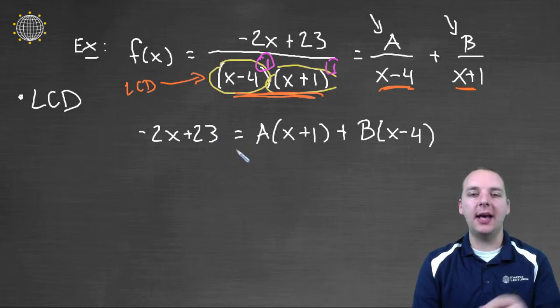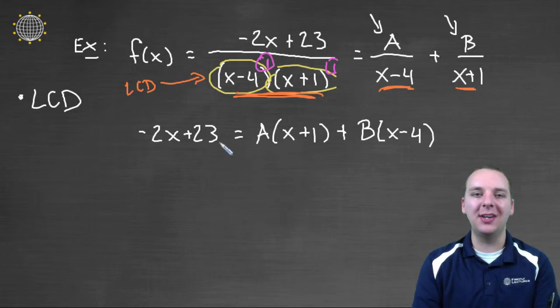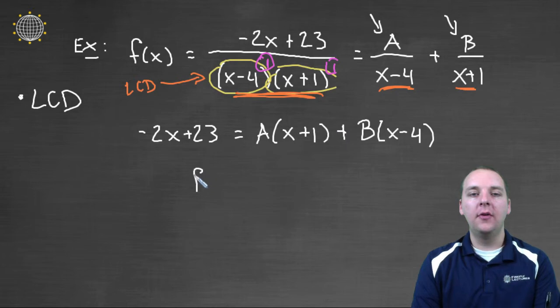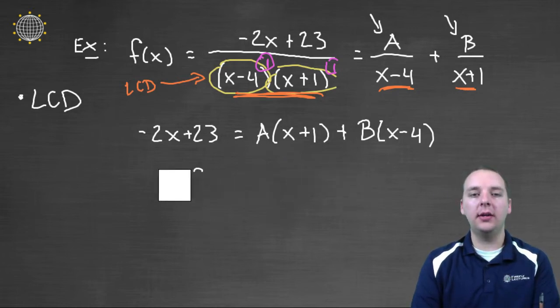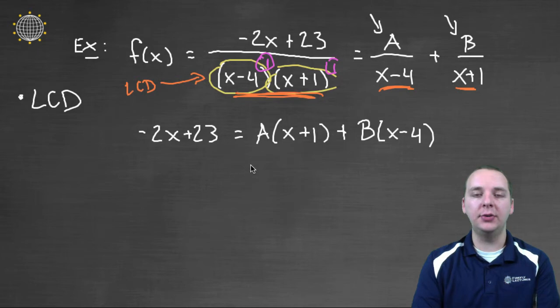This is not an equation that has right answers and wrong answers. This is what's called an identity. This should always be equal to this, and here's the key words, for all x values. It should be true for all x values. Not some, but all x values. So what that means is, we can plug in any x that we want, and this should stay true. It's not true only for certain x's. So here's what we're going to do. We're going to be smart about this. This is clever.